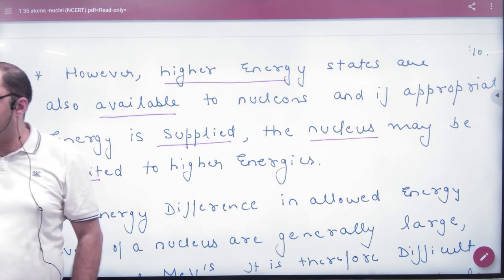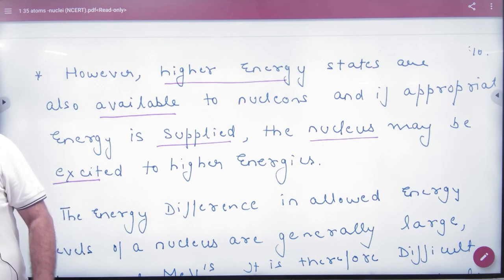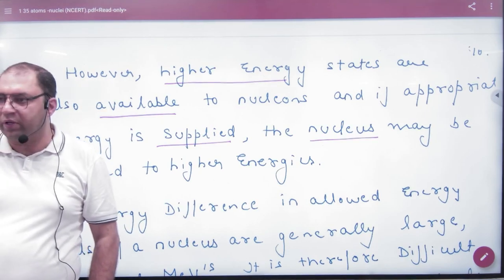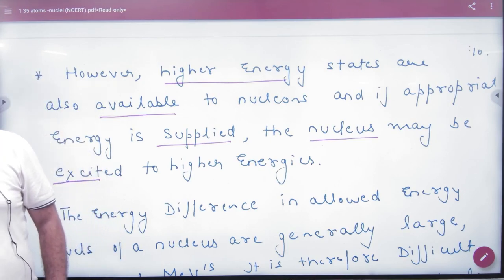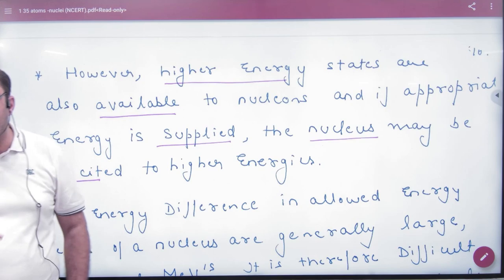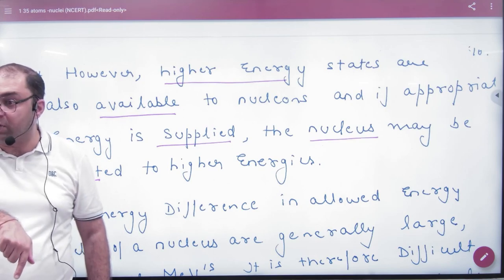I can excite the electron. What is in a bulb? The outer electron excites and light comes. It's not easy to excite the electron of the inner shell. And the nucleus, to excite it, it's very difficult to reach the nucleus.